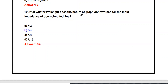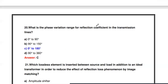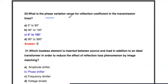Next question: After what wavelength does the nature of the graph get reversed for the input impedance of an open-circuited line? After lambda/2 wavelength, the input impedance of the open-circuited line is reversed.